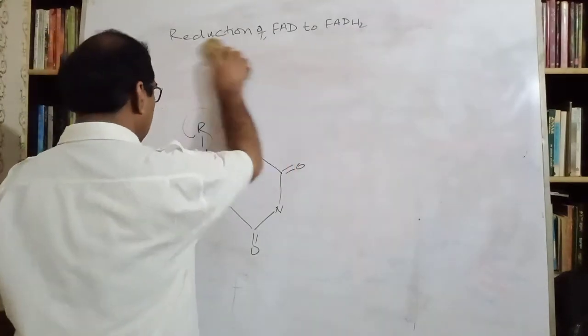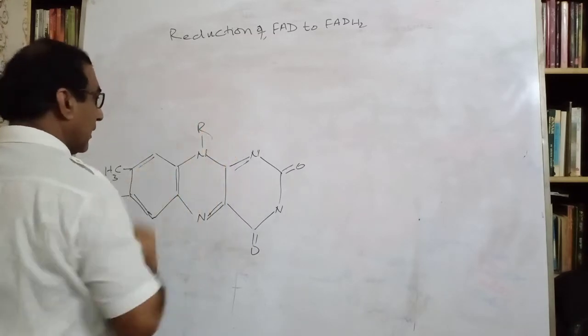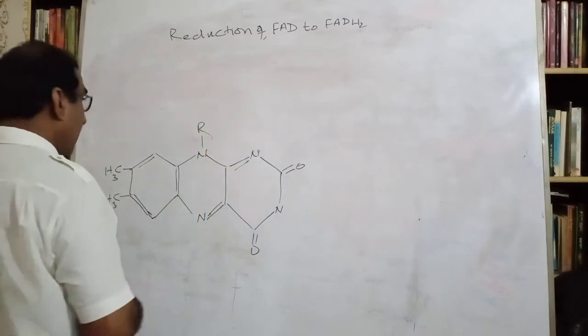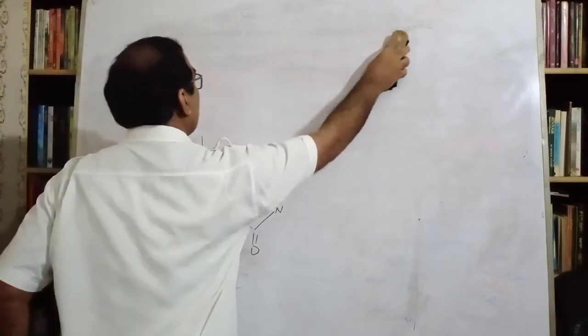So now, let's see what is this R? This is R, this alkyl group. Let me draw the structure of this alkyl group.